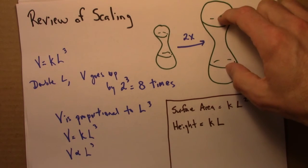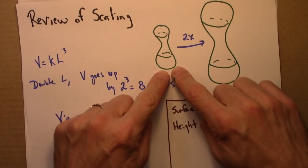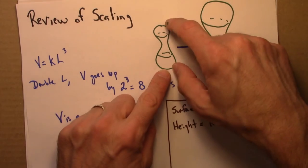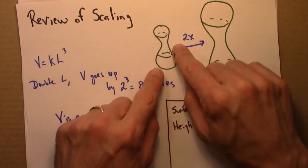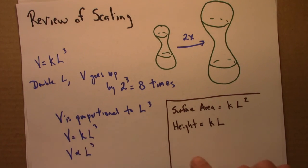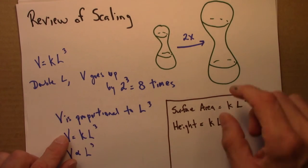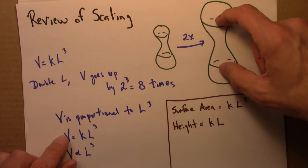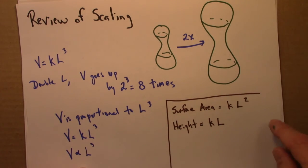Notice that I haven't specified deliberately what L is here. L is just some length. It could be this length, it could be that length. The main thing is we're establishing a relationship between a linear dimension, a length, and either surface area, or height, or volume.